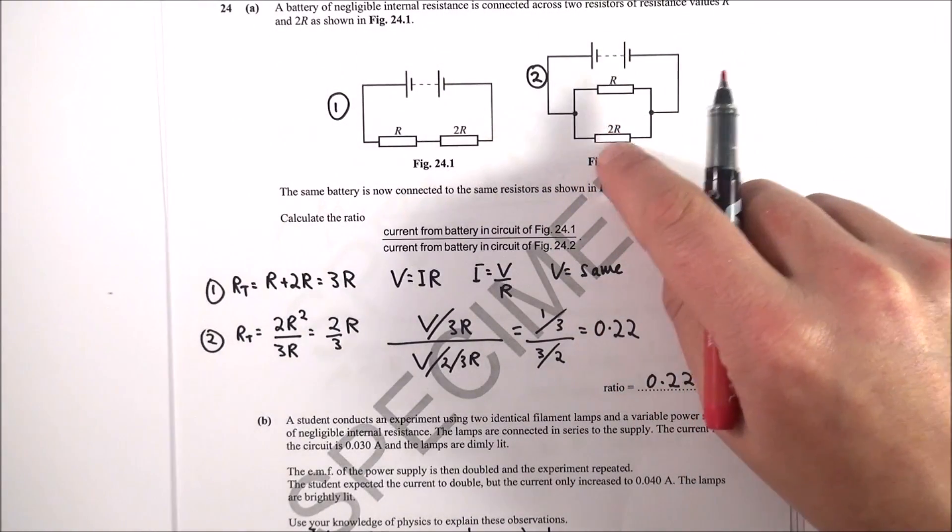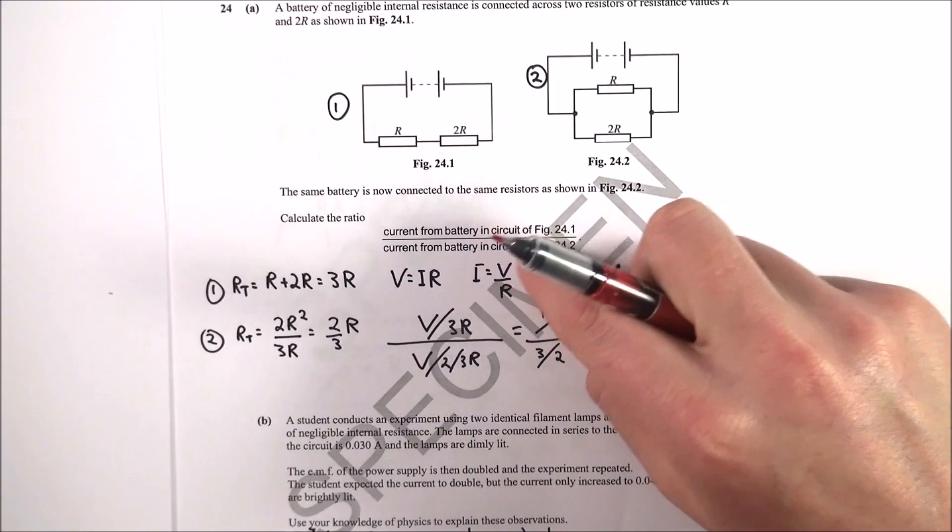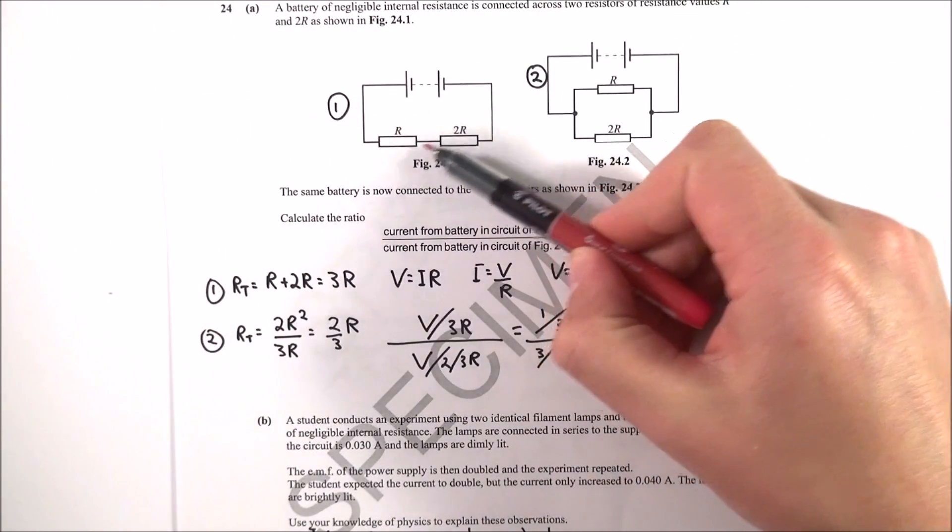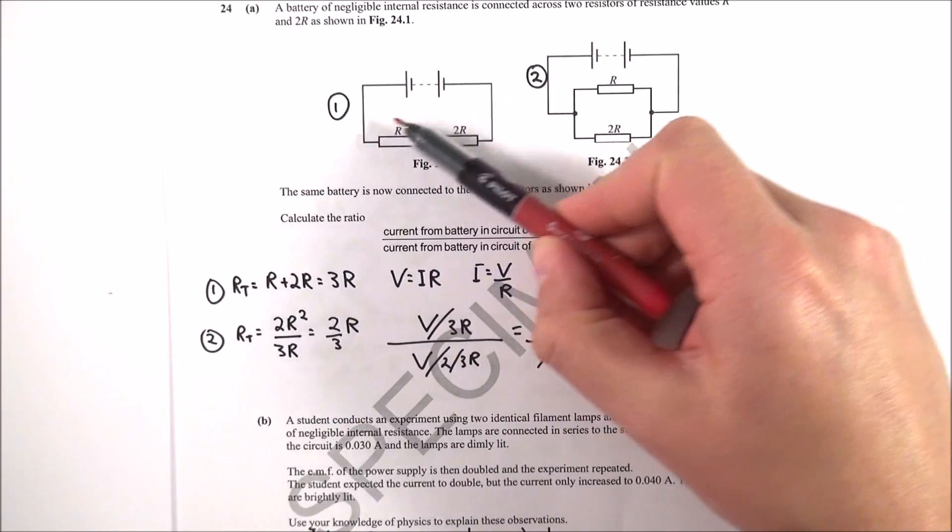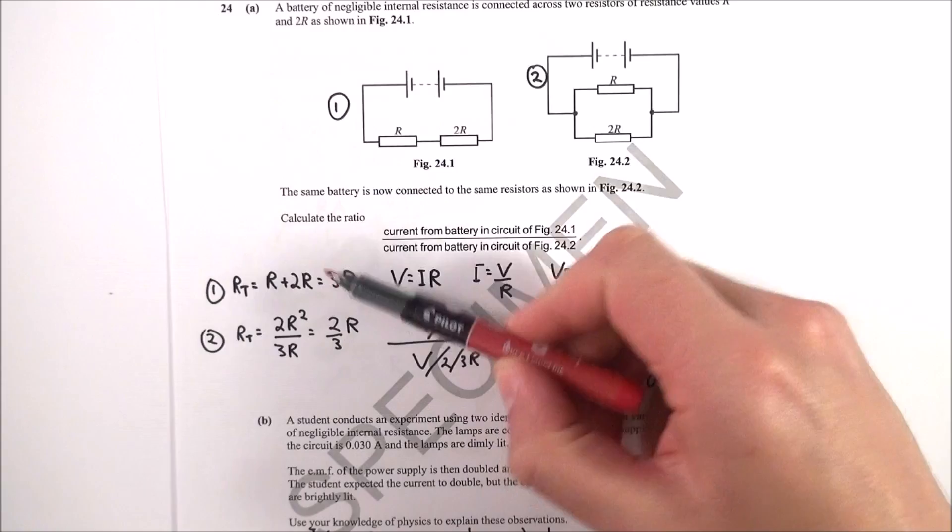Okay, so now we get on to a bit of some electric circuits and there's often questions about ratios. These are often a bit tricky, so first of all what have I done? Well, I've looked at the combined resistance of this circuit, which if it's in series, RT is equal to R plus 2R, which is 3R, so that's got a combined resistance of 3R.